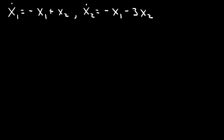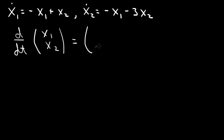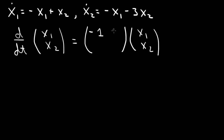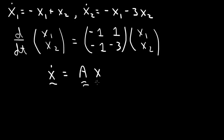Let's consider the system of first order linear differential equations: x1-dot equals minus x1 plus x2, and x2-dot equals minus x1 minus 3x2. We can write that as a vector equation — the time derivative of the vector [x1, x2] equals a matrix A times [x1, x2], where A has first row [-1, 1] and second row [-1, -3]. In short form, this is x-dot equals A times x.